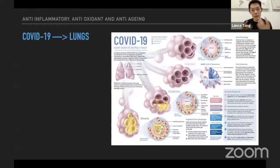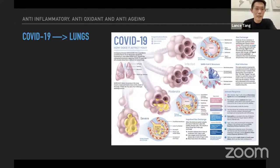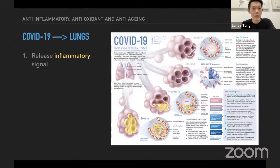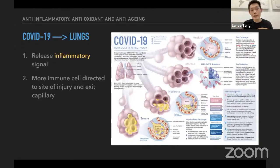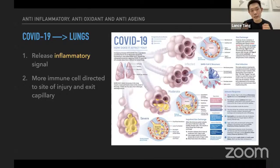COVID-19 is also an inflammation attack to our lungs. People who contract it often have difficulties breathing — and the process that leads to that is also because of inflammation. When the virus enters our breathing system and airway, it releases inflammatory signals to our body. This is a common mechanism — any foreign body attacking our body will release the inflammatory signal, which encourages fluids inside our blood vessels to be released into the tissue.